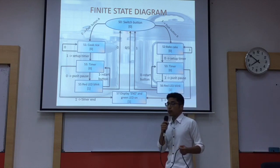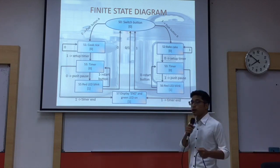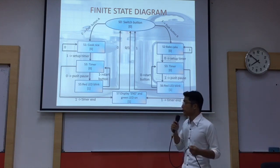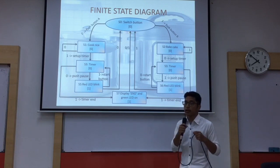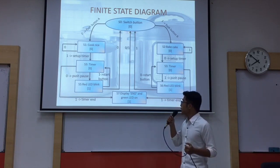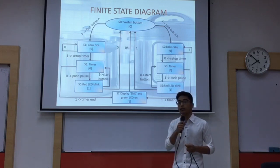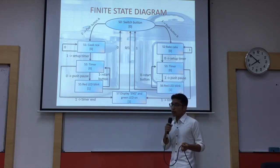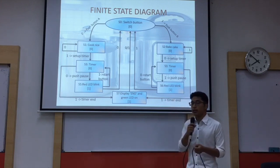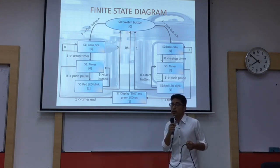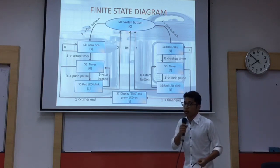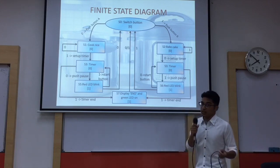If you do not push any pause button, it will continue until the cooking rice process ends, and it will display the end process and the green LED will turn on in the S7 state, which is the output. After the output — which is S5 and S7 — it will automatically go to the first state, which is S0, the switch button. The same goes for baking cake: if you push button B, it will go to the third state, which is S2.